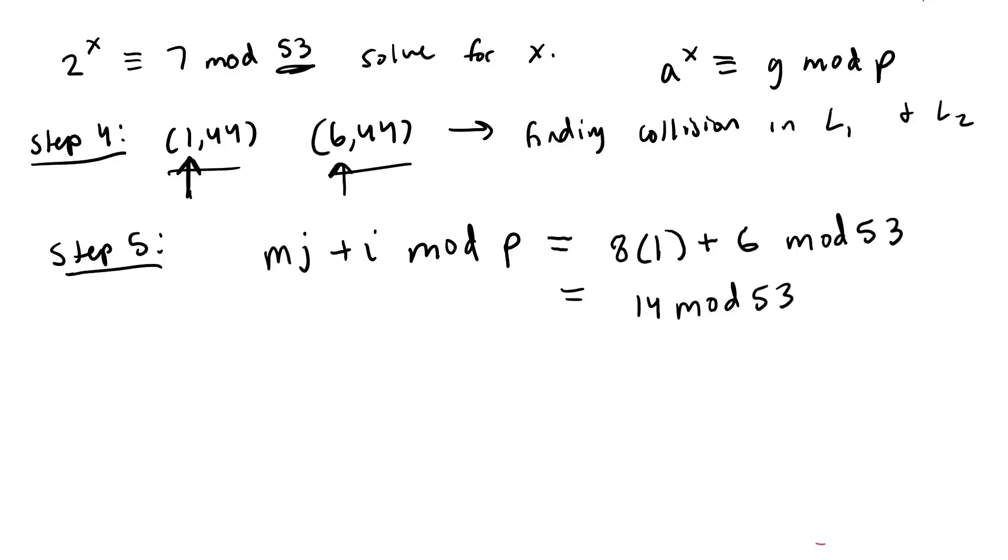And what 14 mod 53 tells us is that this 14 is our x value. So what we want to do is check for that so we try 2 to the 14 mod 53 and lo and behold the answer is 7 which means everything is right and everything works out. So now that we've checked that 14 works we can confidently say that x is 14.